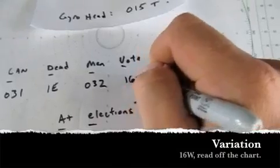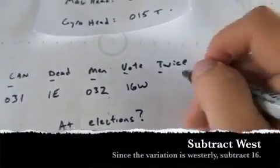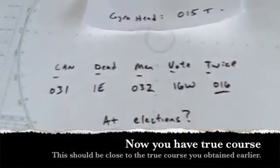We're going to put the variation in, which is 16 west, and we'll subtract that because it's westerly, and our TRUE COMPASS heading should be 016. And that is what we corrected for earlier.